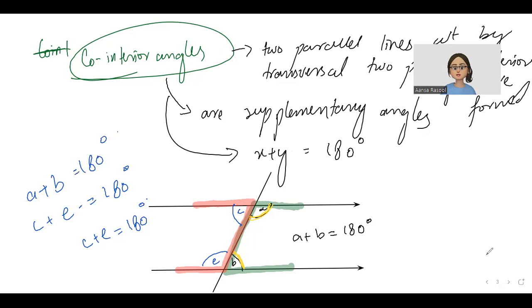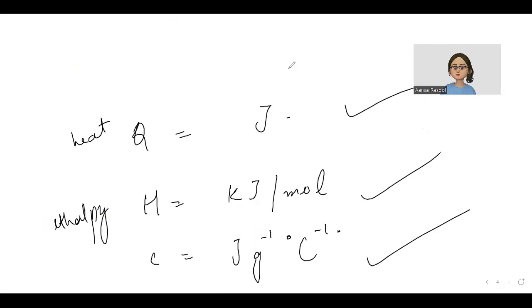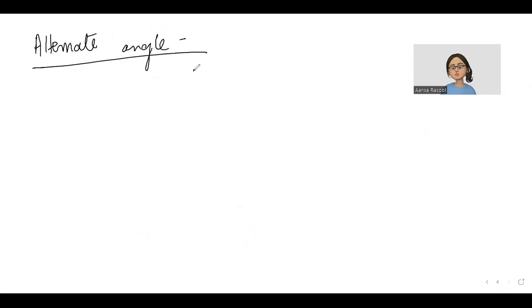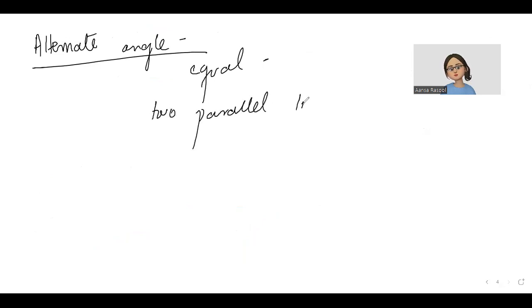I hope you are understanding it. Next is alternate angles. In alternate angles, basically the same thing will happen but a Z-shape will form. Alternate angles are basically equal. So when two parallel lines are cut by transversal, I'm writing each thing on the board so that you can make your notes side by side.